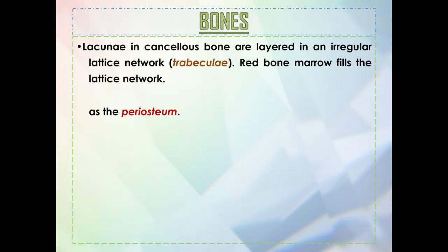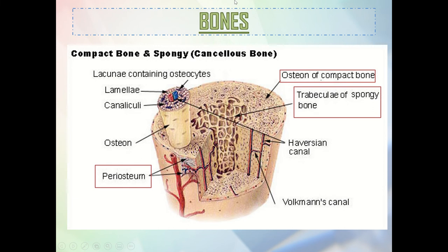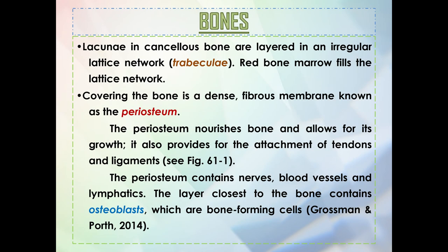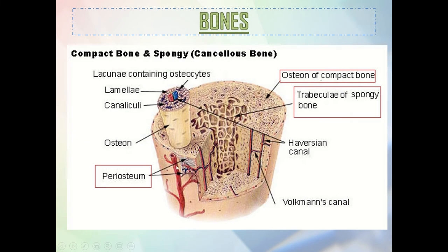Lacunae in cancellous bone are layered in an irregular lattice network called trabeculae, and red bone marrow fills that lattice network. Covering the bone is a dense fibrous membrane known as the periosteum — that is the outermost layer that covers the whole bone. The layer of the periosteum closest to the bone contains osteoblasts, which are bone-forming cells.